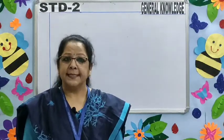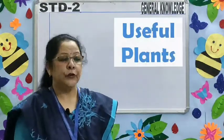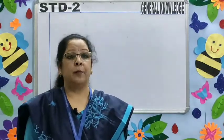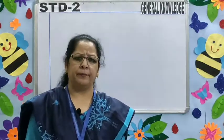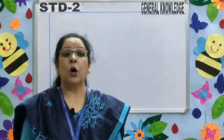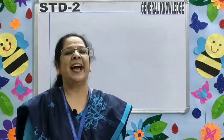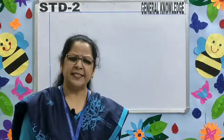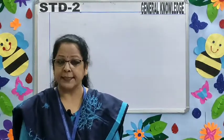Our second topic is Useful Plants. Children, we know that plants are very useful to us. We get many things from them. But the most important thing is oxygen, which helps us to breathe and live. We see many trees and plants around us.